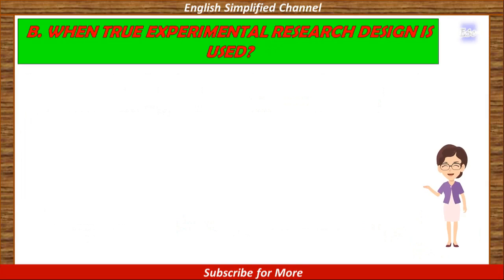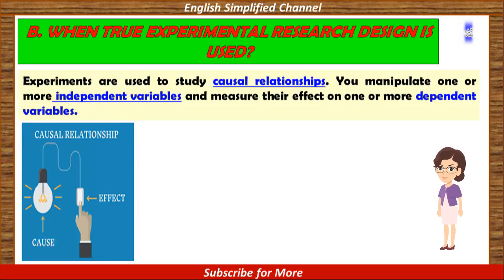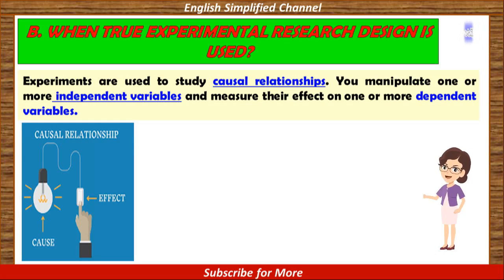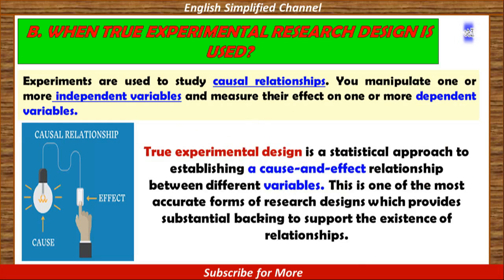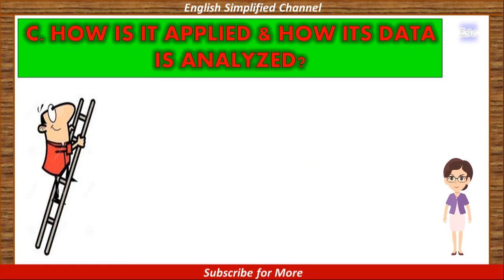Let's continue to Part B: When true experimental research design is used. Experiments are used to study causal relationships. You manipulate one or more independent variables and measure their effect on one or more dependent variables. Therefore, true experimental design is a statistical approach to establishing a cause and effect relationship between different variables. This is one of the most accurate forms of research designs, providing substantial backing to support the existence of relationships. We'll understand this better after discussing Part C.